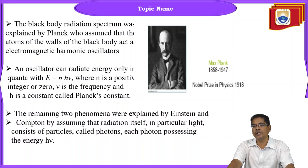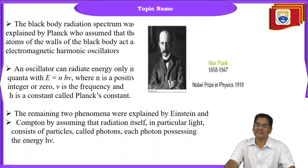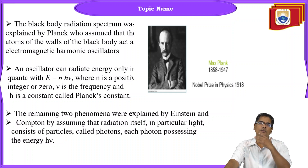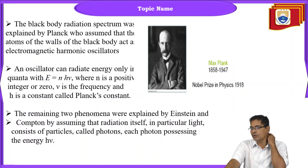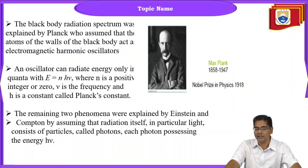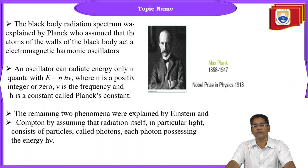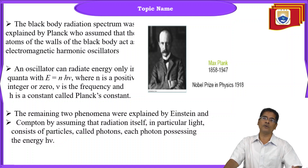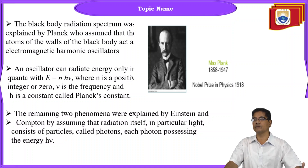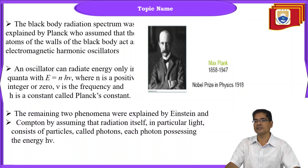The remaining two phenomena were explained by Einstein and Compton. The challenges of classical mechanics were overcome by quantum mechanics. Classical theory failed to explain black body radiation, photoelectric effect, stability of the atom, and light features like interference, diffraction, and polarization.